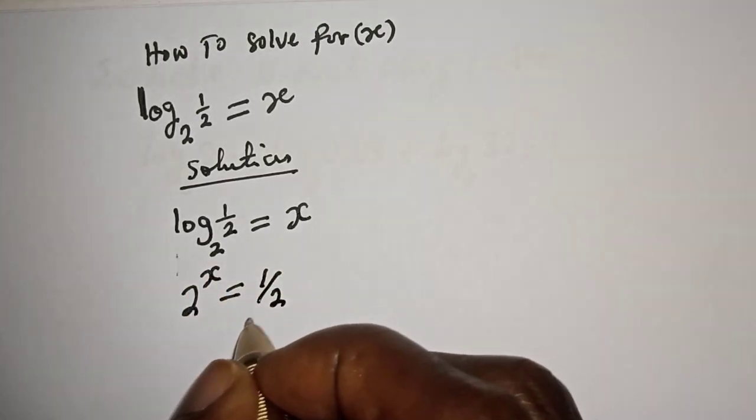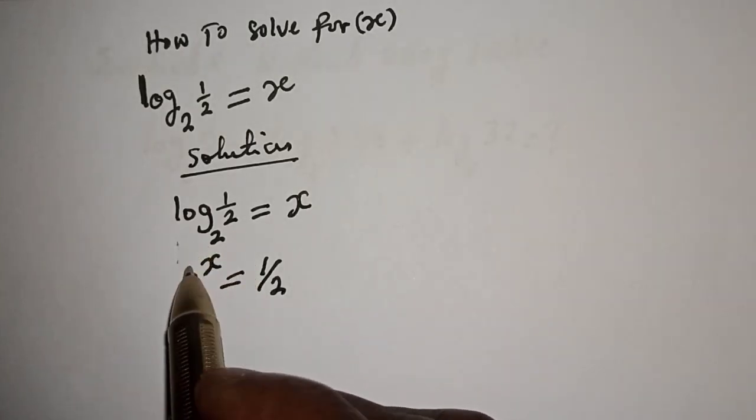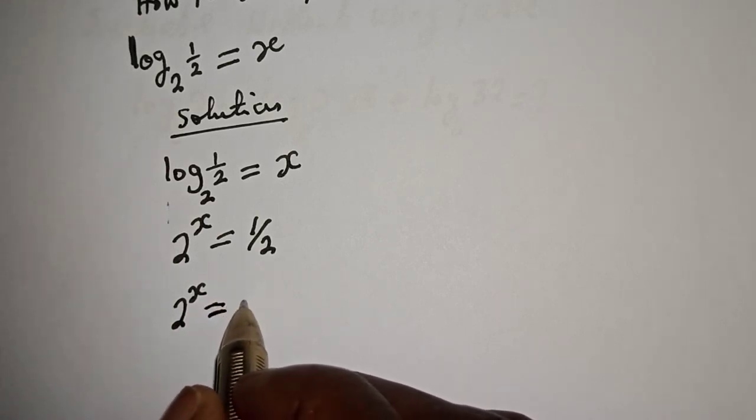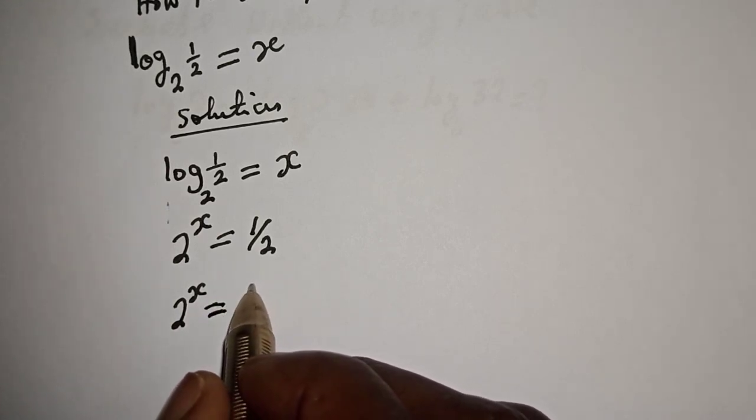From the law of logarithm, 2 raised to power x is equal to 2 raised to power minus 1. This is base 2, base 2.